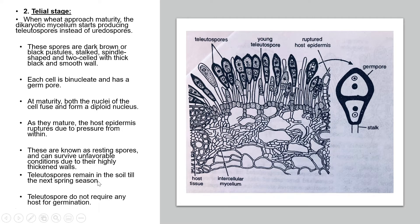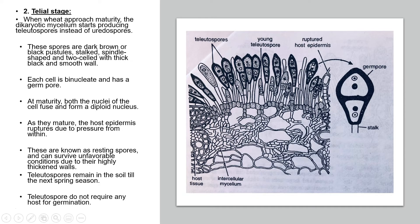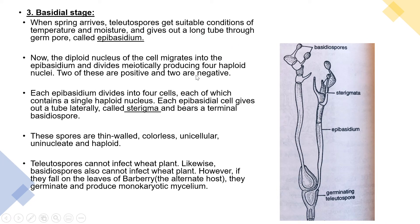Teliospores remain in the soil until the next spring season and do not require any host for germination. In the basidial stage, when spring arrives, teliospores get suitable conditions of temperature and moisture and produce a long tube through the germ pore called the epibasidium.